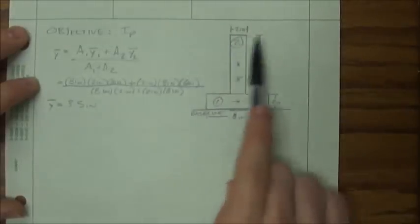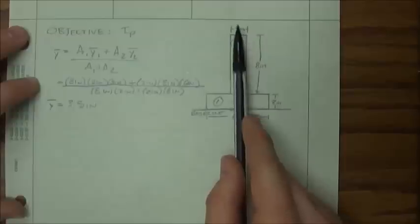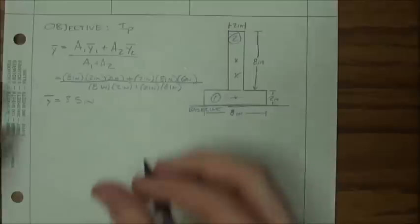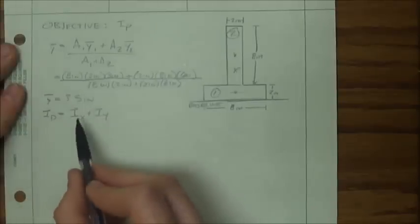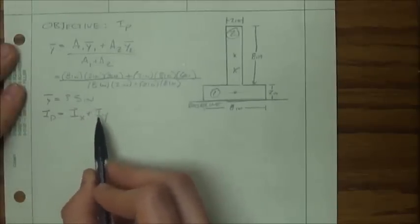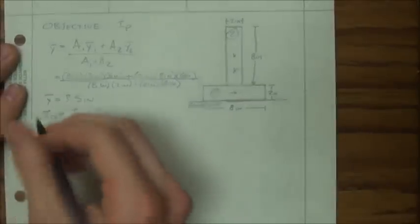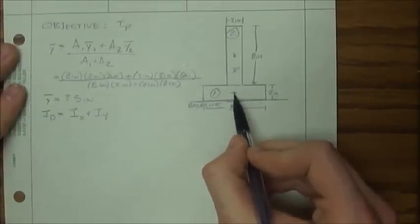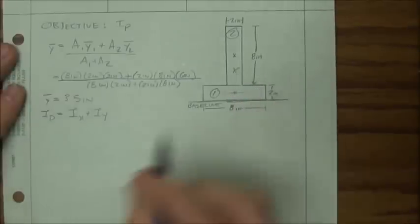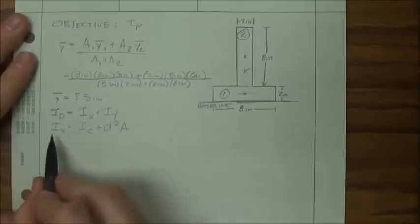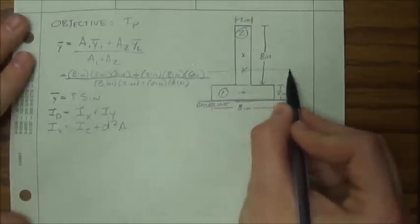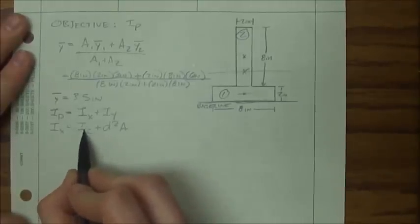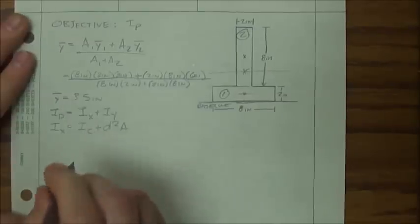Now we know where our centroid is, measured up from the baseline. As far as side to side, we know the centroid is right in the middle because it's symmetrical. Now we want to find the moment of inertia using this equation: the polar moment of inertia equals the moment of inertia in the X direction plus the moment of inertia in the Y direction. Since these centroids are a distance from this axis, we're going to have to use the parallel axis theorem.